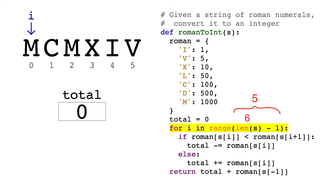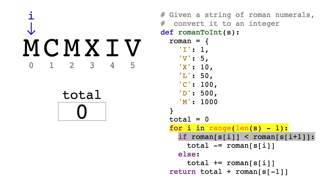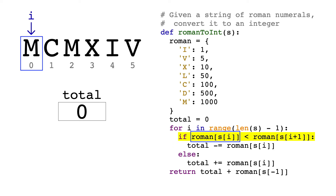Since the range function excludes the last number, this loop will run from 0 to 4. You'll notice that index 4 is 1 before the last character. So why do we stop at the second-to-last character? We're going to compare the character at index i to the character at index i plus 1 — this is why we stop 1 before the last character. If i was index 5, then trying to access index 6 would result in an error. So at index 0, we have M, and we look up the corresponding value in the dictionary, which is 1000. We do the same thing on the other side using the i+1 index — that's the character C, which corresponds to 100.